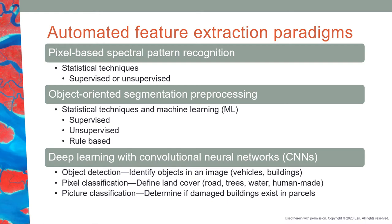Let us now summarize the automated feature extraction approaches we have looked at in this course. We have looked at pixel-based spectral pattern recognition techniques — basic pixel-based unsupervised and supervised classification. Then we moved on to object-oriented segmentation pre-processing, or OBIA — object-based image analysis — using statistical and machine learning techniques based in supervised, unsupervised, and rule-based classification. We also have deep learning with convolutional neural networks, or CNNs, which are very useful for object detection, pixel classification for defining a land cover map, and picture classification — for example, determining if damaged buildings might exist in parcels, which is very useful for disaster response.